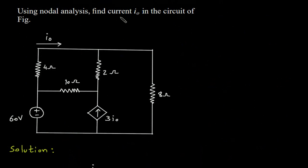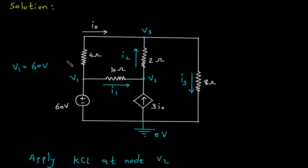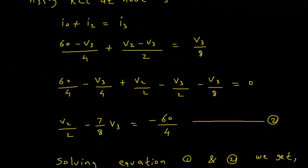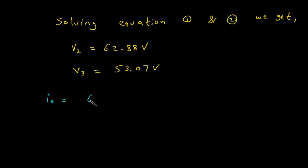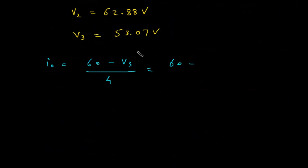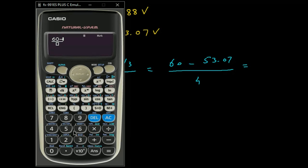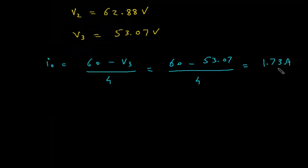What we have to find is current I₀. I₀ = (60 − V3)/4 = (60 − 53.07)/4 = 6.93/4 = 1.73 ampere. Therefore, I₀ = 1.73A.